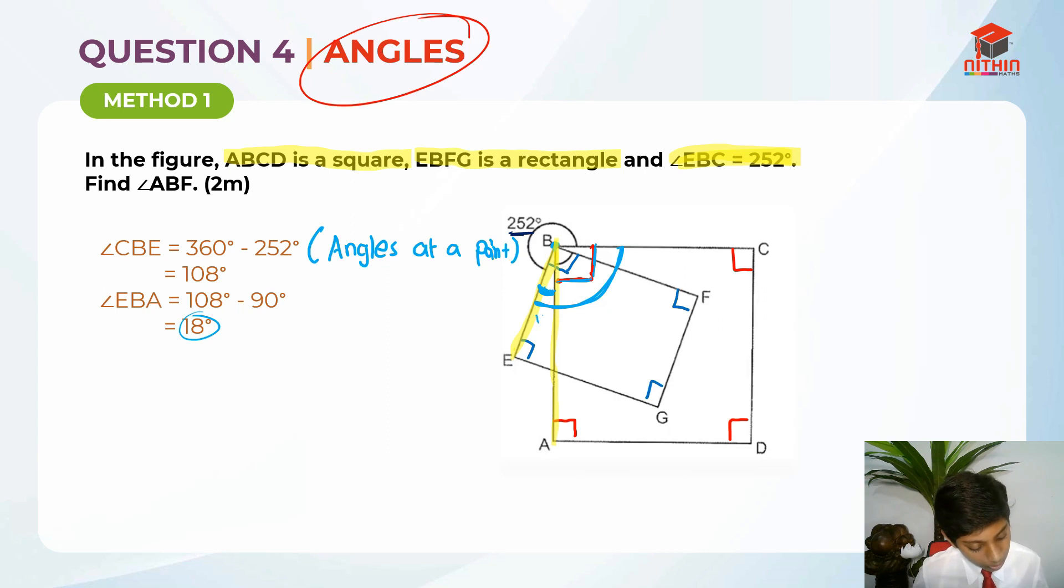After we have find EBA, which is 18 degrees, we can move on to find ABF. And, I'll explain to you how we do that. Finding ABF. This is ABF. I'll show you right now. ABF. This is angle ABF. We are supposed to find this angle over here.